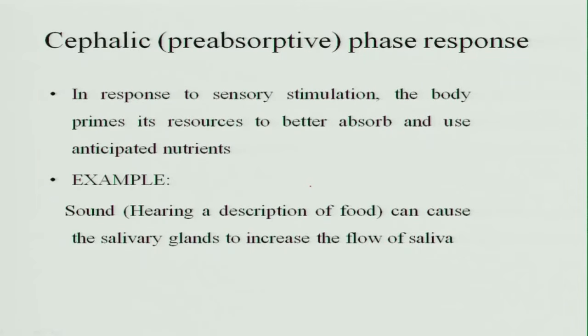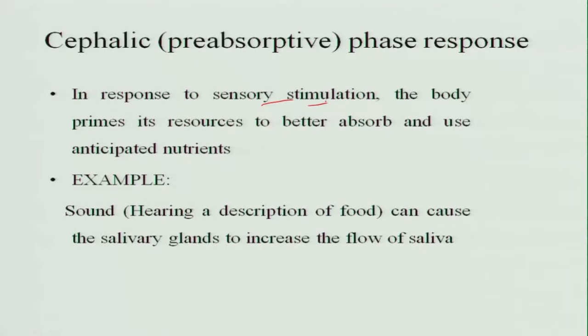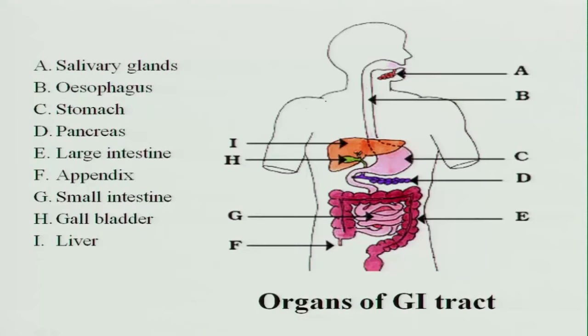There is a pre-absorptive stage called the cephalic phase response — 'cephalic' meaning brain. Before we eat the food, in response to any sensory stimulation, the moment we think of food, saliva is produced in the mouth and gastric acid is produced in the stomach. This is the body's response to sensory stimulation and it helps in better absorption of the anticipated nutrients. Even hearing a description of food can produce saliva in the salivary glands.